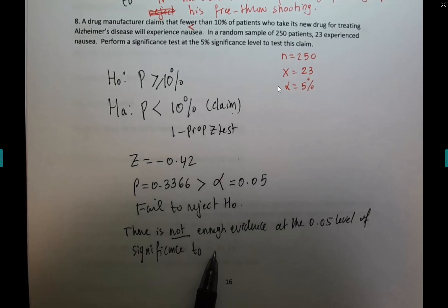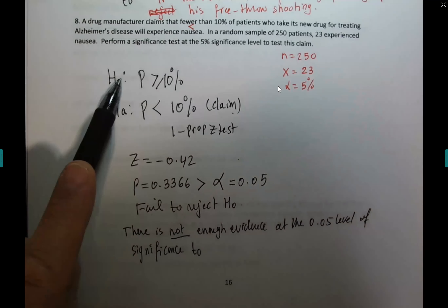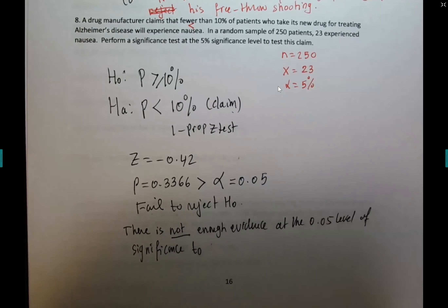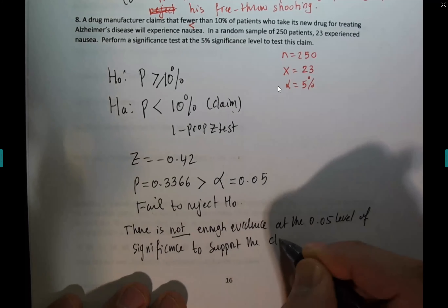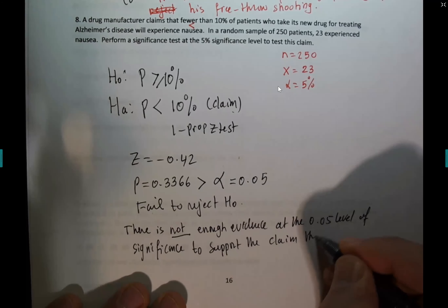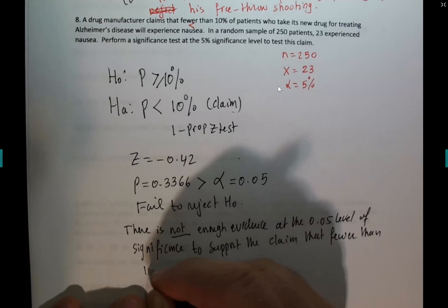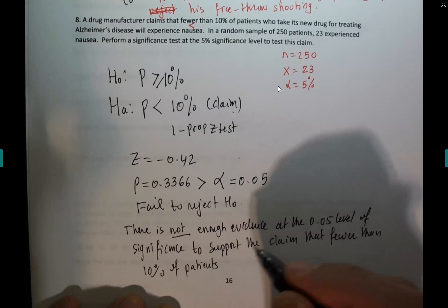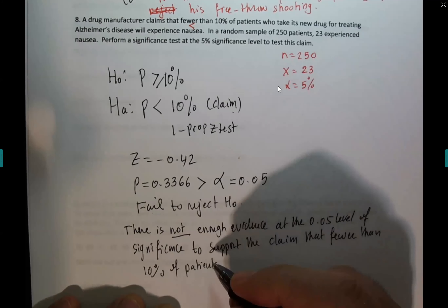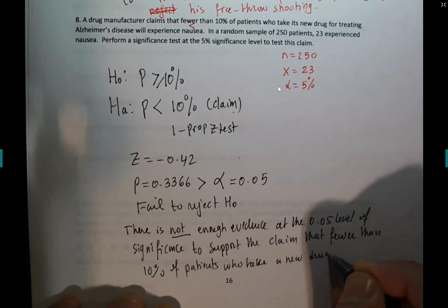If the claim is in HA, we never use the word 'reject' in the conclusion. If the claim is in H0, we use 'reject.' So: to support the claim that fewer than 10% of patients who take the new drug for treating Alzheimer's disease will experience nausea.